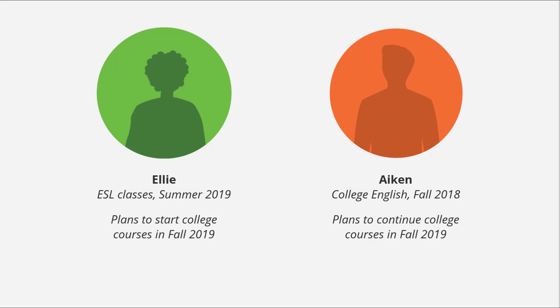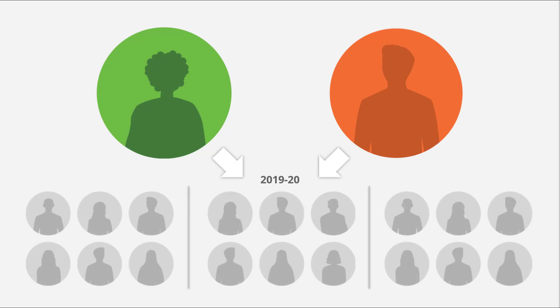For example, Ellie takes ESL courses at our institution in summer 2019 and plans to start college courses in fall 2019. Aiken takes a college English course in fall 2018 but is also taking high school classes. When he graduates high school, he continues to take classes at our institution in fall 2019. Both students should be put into the 2019-2020 cohort with a cohort term of fall, and can indicate they have passed summer or dual-enrollment in the cohort file. Ultimately, our institution has the flexibility to decide which terms and cohorts to report for different groups of students.